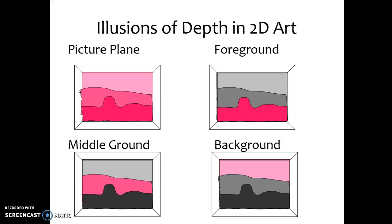When creating the illusion of depth in two-dimensional artwork, there are a couple of terms that are important to know. First is the picture plane. This is the entire area of a work of art, the whole piece. All the different layers and grounds represent the picture plane.